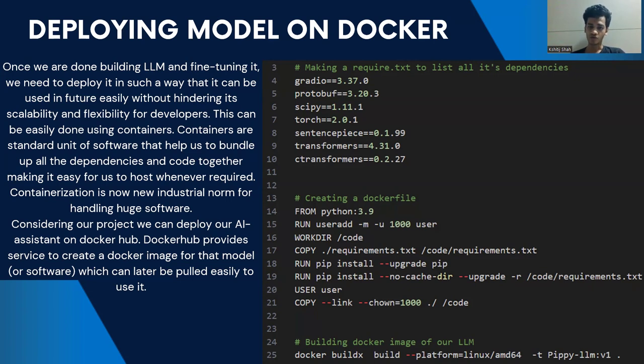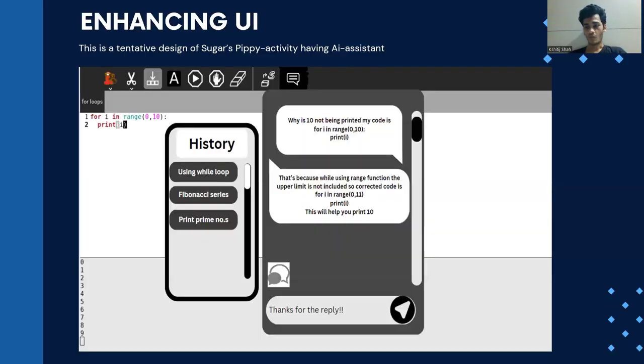Here you can see how all the dependencies like Torch, Scipy, Sentence Transformers, and C-Transformers have been bundled up. These are bundled up to form a Docker file and then these Docker files eventually form a Docker image. This is the advantage of containerization. With help of containerization, the scalability and flexibility of the model increases and hence it can be easily upgraded by other developers.